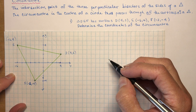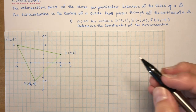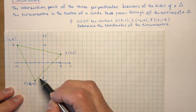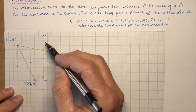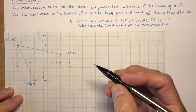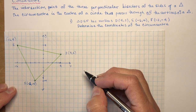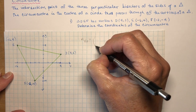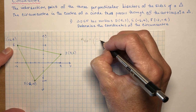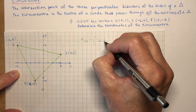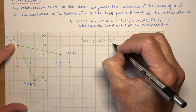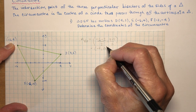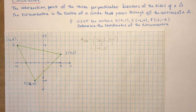We want to find the equations of two perpendicular bisectors. We'll pick EF and DF — it doesn't matter which two you choose; all three go through the same point but you only need two to find the intersection. Let's start by finding the midpoint of EF: add the x's, (-6 + -2) / 2, and the y's, (4 + -4) / 2, giving us the midpoint (-4, 0).